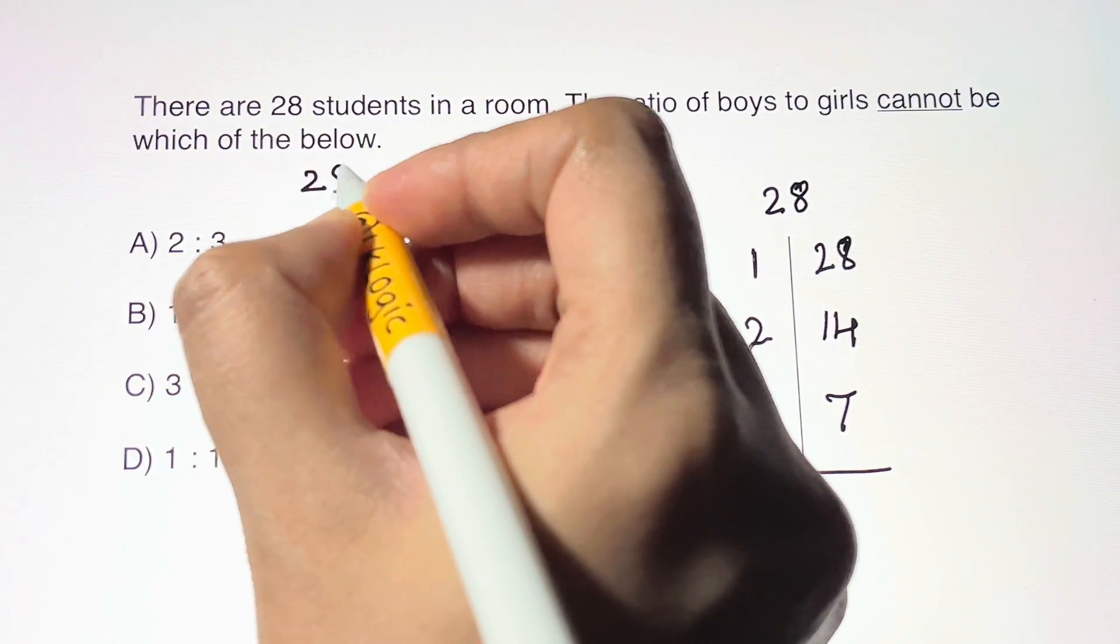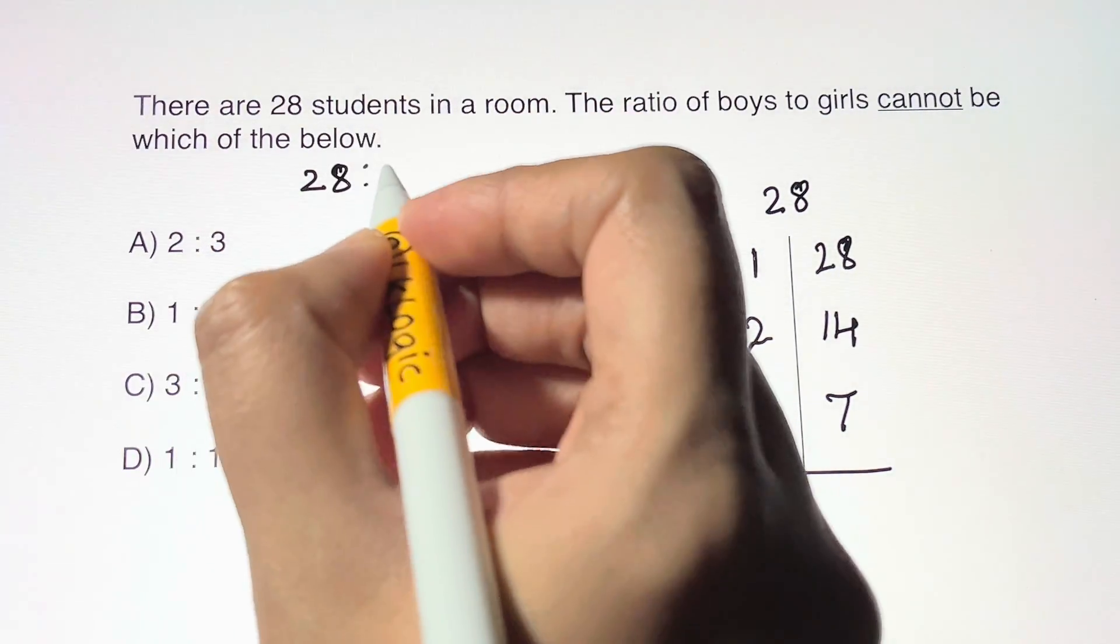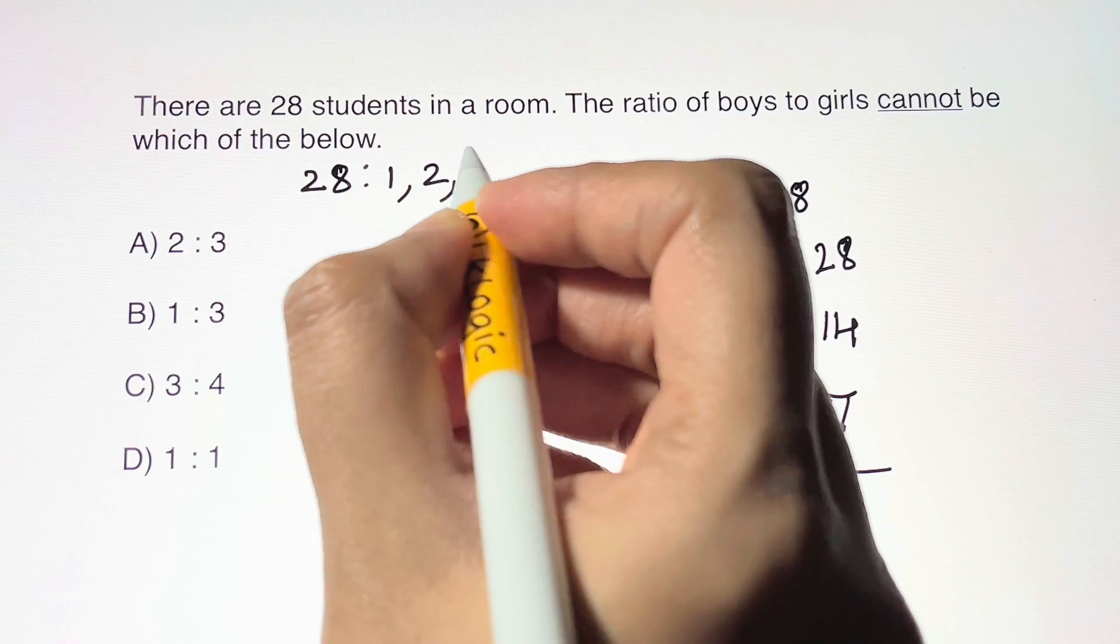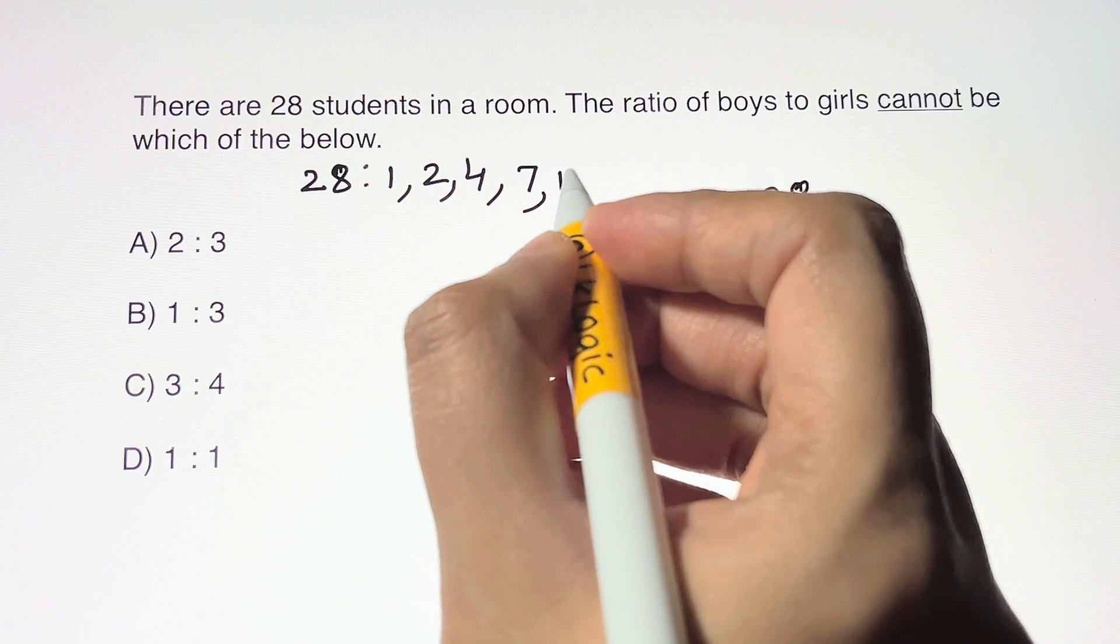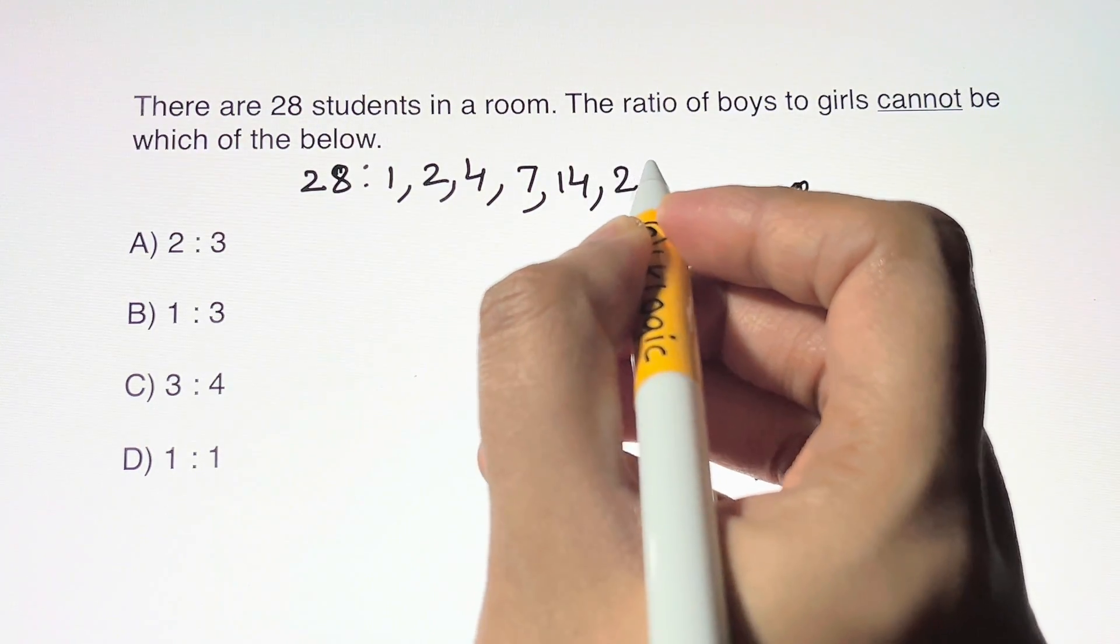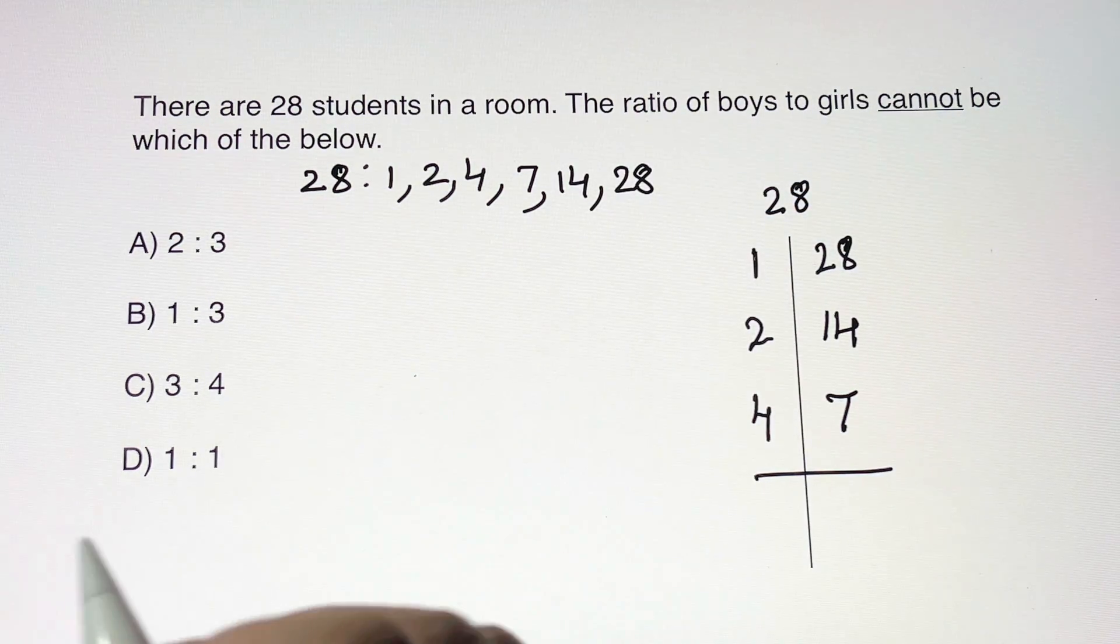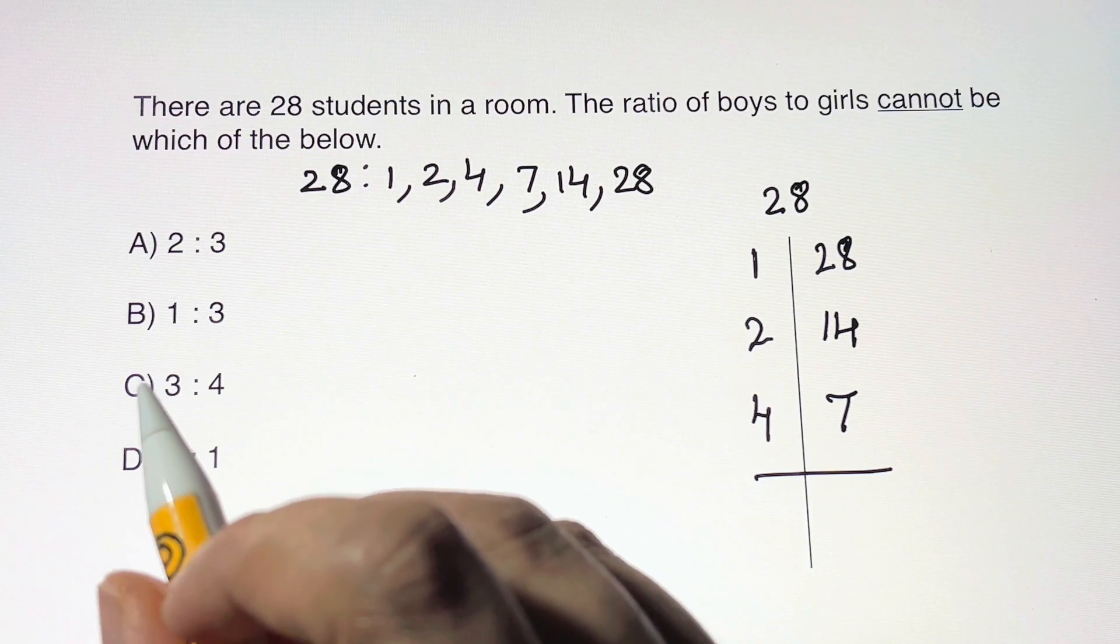So the factors of 28 are 1, 2, 4, 7, 14, and 28.